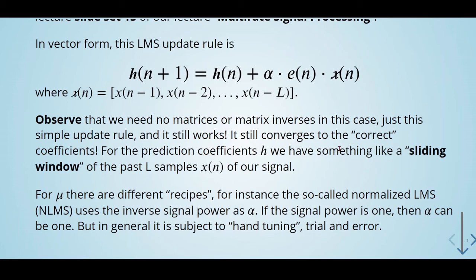For mu, there are different recipes. For instance, the so-called normalized LMS uses the inverse signal power as alpha. If the signal power is 1, then alpha can be 1. But in general, it is subject to hand tuning and trial and error.